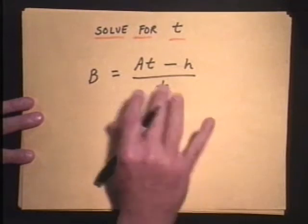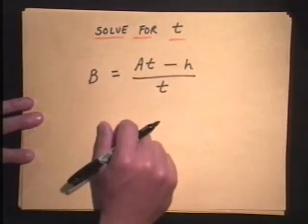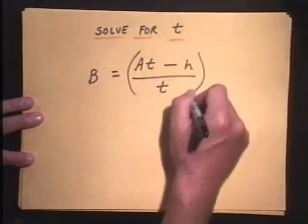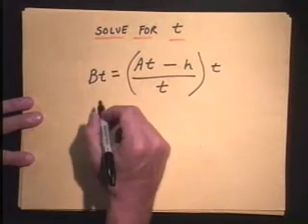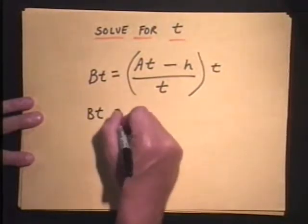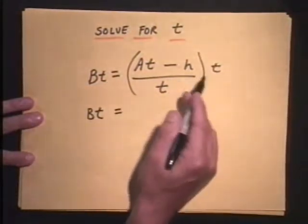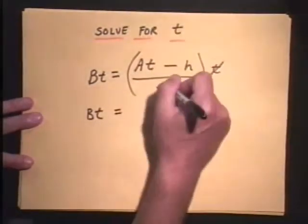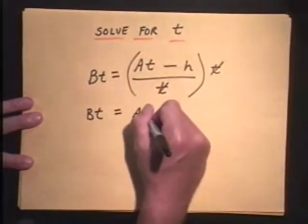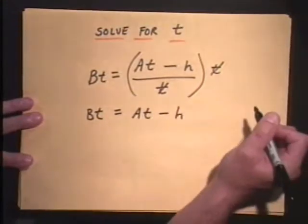So, again, we want to get rid of those fractions by multiplying through by the common denominator, which in this case, again, is the only denominator, t. So when I multiply by t, I get B times t equals what happens over here? You know what? The old chop, chop, the t's go out, and we're left with A times t subtract h.